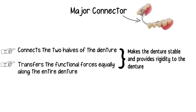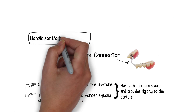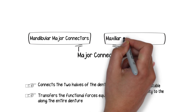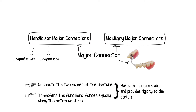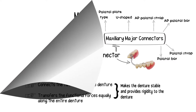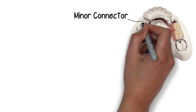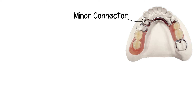Therefore, the major connector provides optimum stability to the prosthesis by connecting the two halves of the denture and distributing the functional forces along the entire removable partial denture framework. There are other principles of major connector design, and likewise various different types of mandibular and maxillary major connectors, each with their own specific usage, which I will discuss in another video.